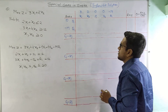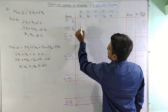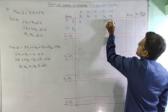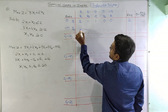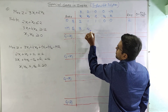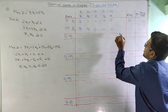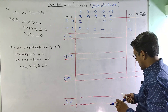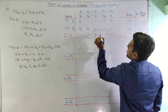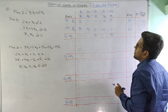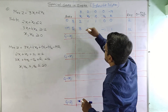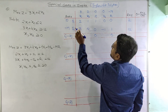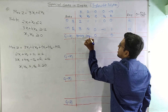Now let us write the constraints. For S1: coefficients are 2, 1, 1, 0, 0, equals 2. For A1: coefficients are 3, 4, 0, minus 1, 1, equals 12. Now we calculate Cj minus Zj. Since S1 and A1 are basic variables, they carry 0 value. The values work out to 3M plus 3 for x1, 4M plus 2 for x2, and minus M for the artificial variable column.